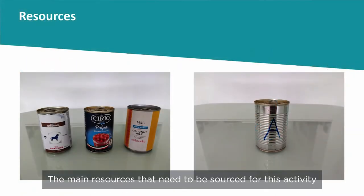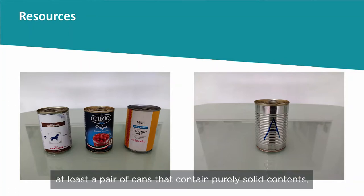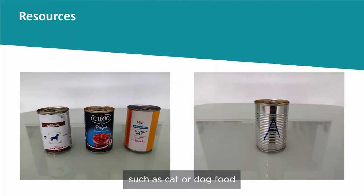The main resources that need to be sourced for this activity are pairs of cans, a minimum of three. At least one pair of cans should contain purely solid contents, such as dog or cat food.